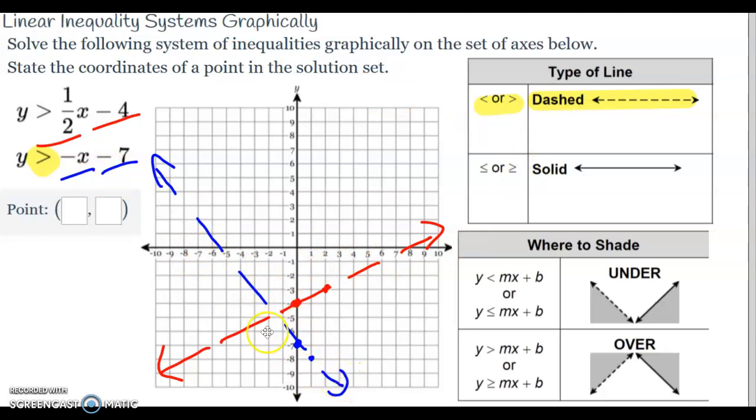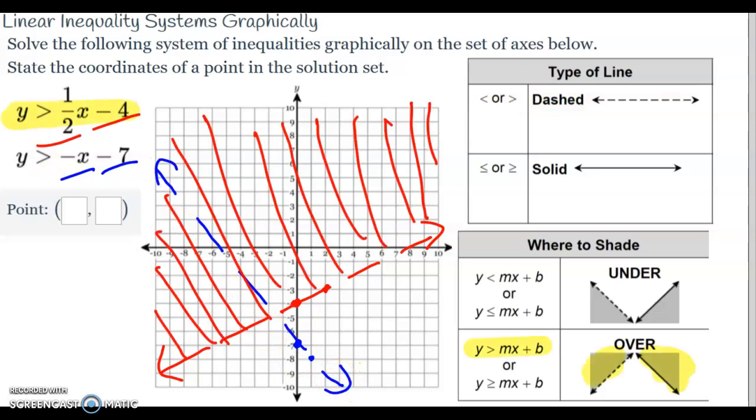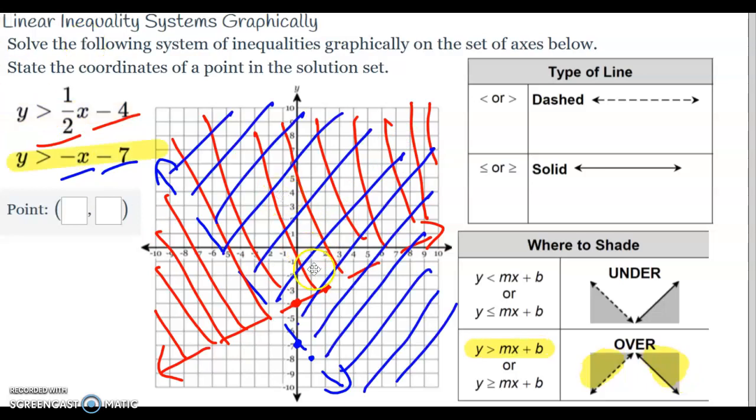Now going back to the red one here, because it's greater than, I'm going to shade up. I'm going to go up and shade up. The reason I did it late is because I wanted to draw what that blue line is supposed to be first. Now I'm shading up for the red one. Now I'm going to look at the blue one. The blue one is also greater than, so I shade up from the blue line as well. You've got the red going this way and then the blue going this way.